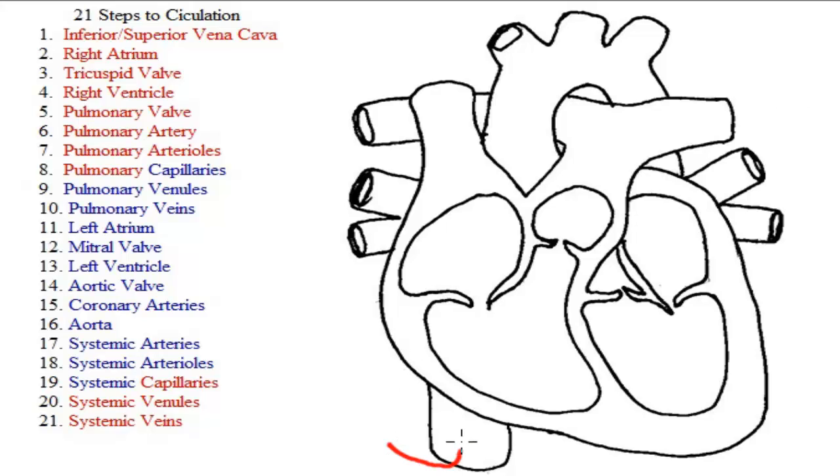We're gonna start our 21 steps with blood entering the inferior and superior vena cava, but that's by no means where circulation starts. It's a cycle. You have blood in all of these locations. We're gonna start here.